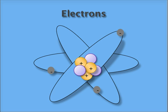As you can see here, there are three positively charged protons and three negatively charged electrons. Electrons are responsible for determining how an element reacts with other elements.